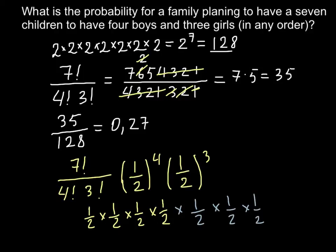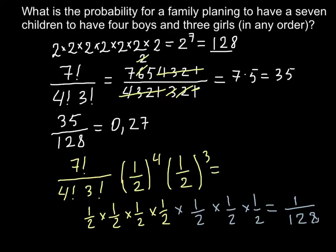The answer for this part equals 1 over 128. So we have 35 multiplied by 1 over 128, which gives us 35 over 128 — the same answer as before.